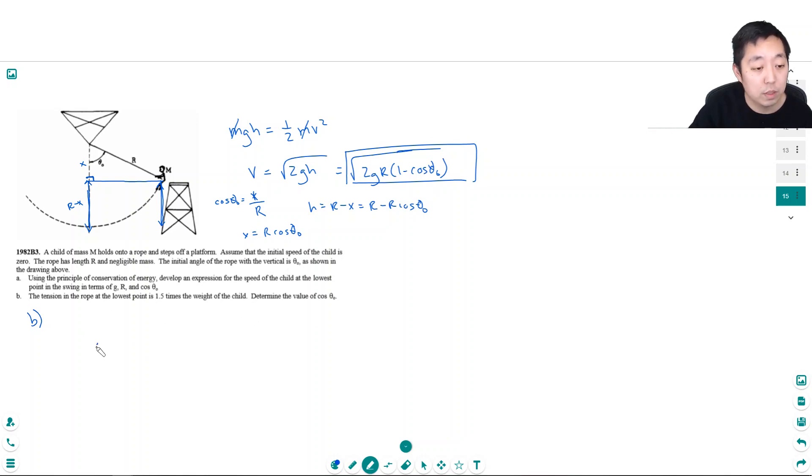So at the bottom point, what's the free body diagram? I have tension here. I have force of gravity. And I'm given that t is equal to 1.5 times the force of gravity, the weight of the child.